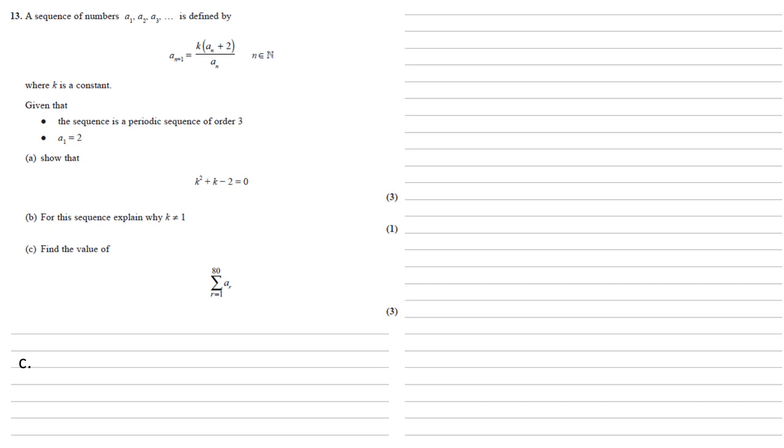For part C we need to find the value of the sum from R equals 1 to 80 of A R. To start this, let's work out what K is. We know that K squared plus K minus 2 equals 0.